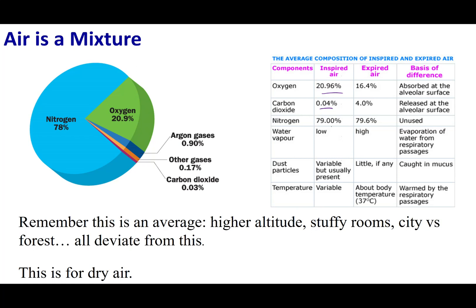The majority of our atmosphere is nitrogen at 79%. What I have on this chart is the air that you breathe in versus what you exhale. You use the oxygen in the air for your metabolism, so the percentage of oxygen goes down. Carbon dioxide is raised, nitrogen stays fairly the same. When you breathe out, the biological mucus layers add water vapor. And you guys are tremendously good filters — even in a very dusty atmosphere, the air you breathe out has very little to no dust particles.